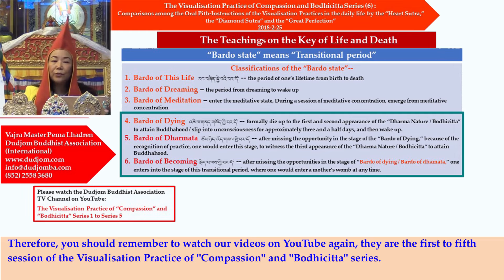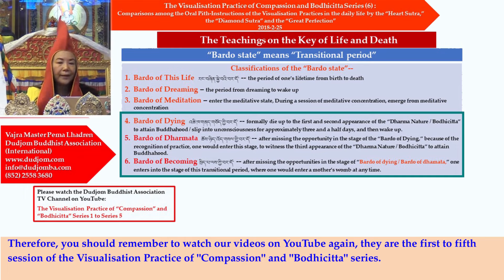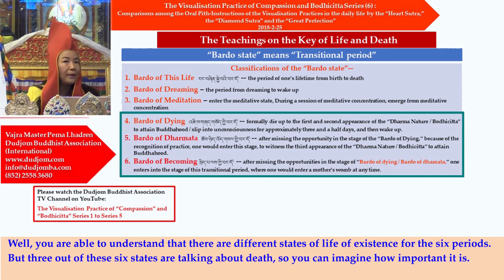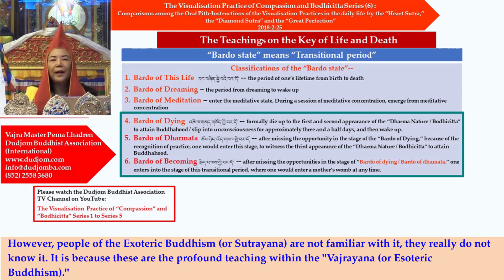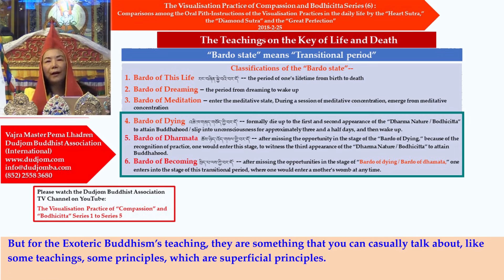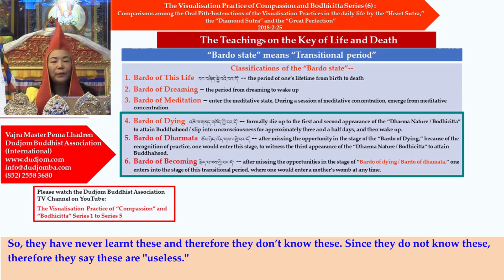Therefore, you should remember to watch our videos on YouTube again — the first to fifth sessions of the visualization practice of compassion and bodhicitta series. You are able to understand that there are different states of life of existence for the six periods, but three out of these six states are talking about death, so you can imagine how important it is. However, people of the exoteric Buddhism or Sutrayana are not familiar with it — they really do not know it. These are the profound teachings within Vajrayana or esoteric Buddhism, while exoteric Buddhism's teachings are more superficial principles.